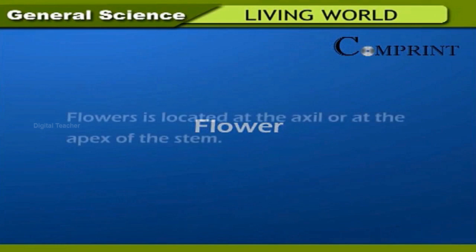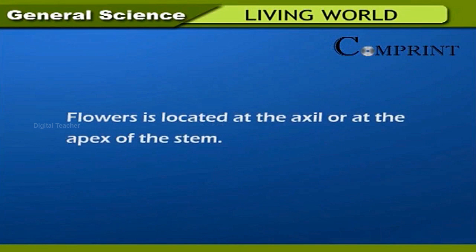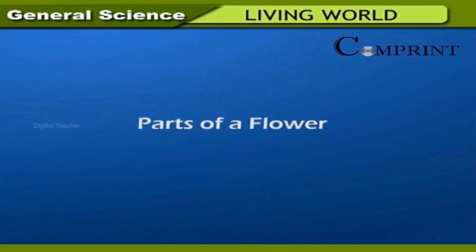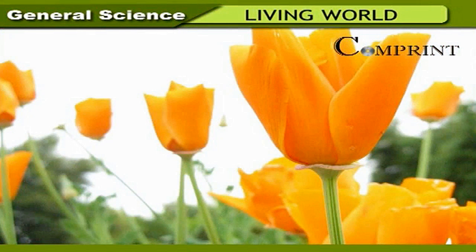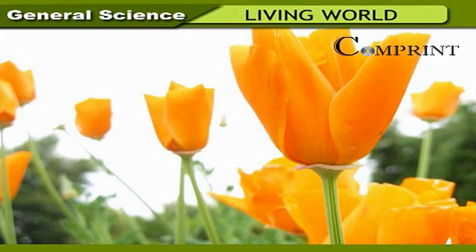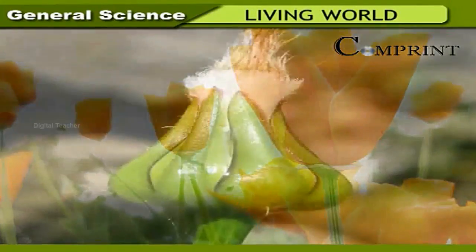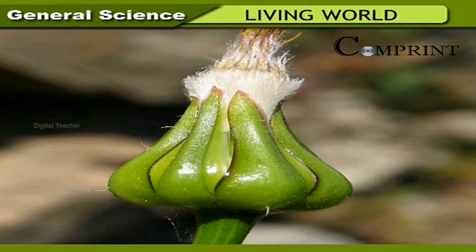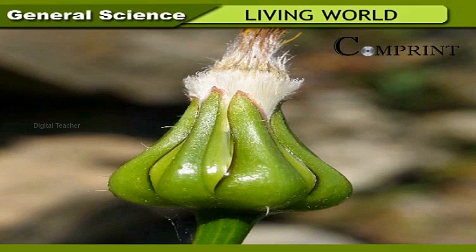Flower. A flower is located at the axil or at the apex of the stem. Parts of a flower: The flower is attached to the stem with a stalk known as the pedicel. The upper part of the pedicel is swollen and is called the thalamus. On the thalamus, all the floral parts are arranged in four whorls. They are: 1. Calyx, 2. Corolla, 3. Androecium, 4. Gynoecium or pistil.